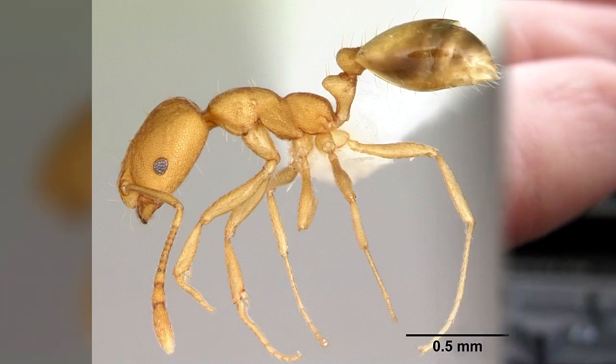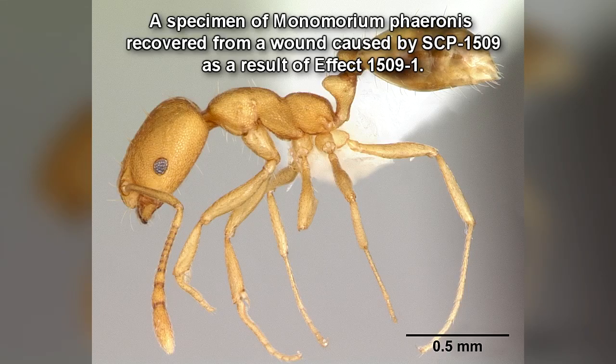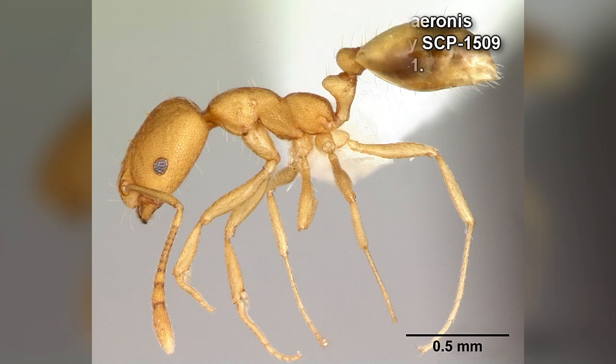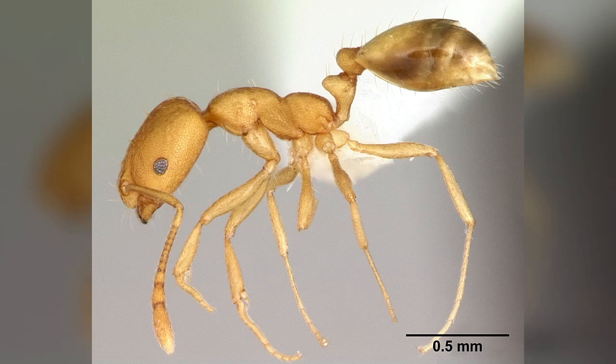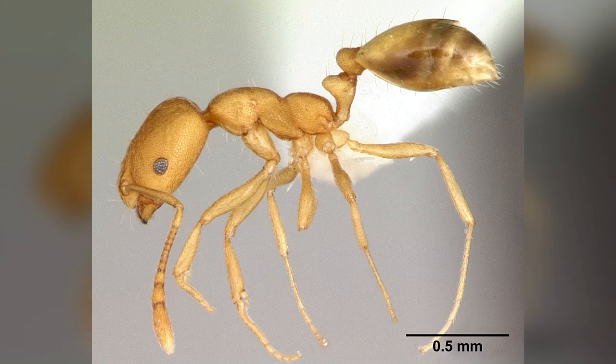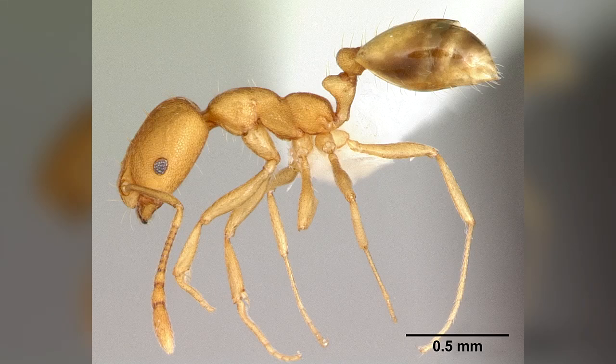Within 3 hours of being cut by SCP-1509, the wound left by SCP-1509 will release a group of pharaoh ants, Monomorium pharaonis, usually numbering between 1 and 15 ants at a time. Examination has shown that these ants appear within the wound and crawl towards the opening ceaselessly from the point of their appearance, but the source of these ants has not been discovered. The ants do not appear to have any anomalous properties.